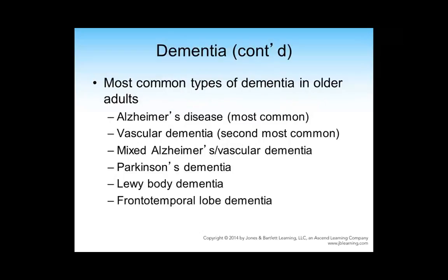The textbook does a nice job talking about the different types of dementias. Alzheimer's disease is the most common, seen in 60 to 80 percent of cases. We are learning much more about vascular-type dementia right now. With Alzheimer's disease, the profound changes we see are what we call amyloid protein plaques and neurofibrillary tangles.